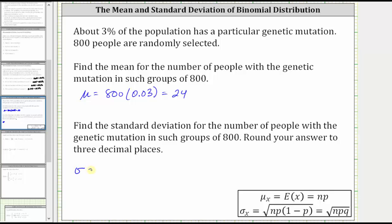So, by hand, the standard deviation is equal to the square root of 800 times 0.03 times 1 minus 0.03, which is 0.97.